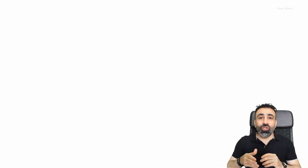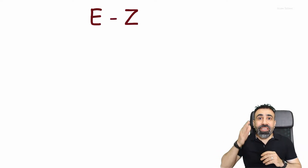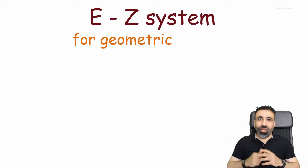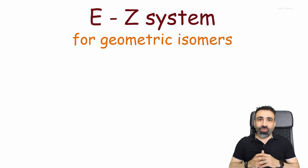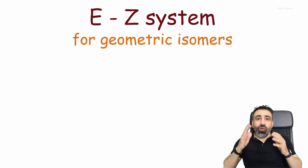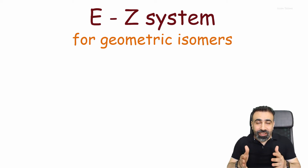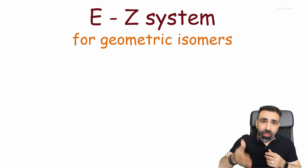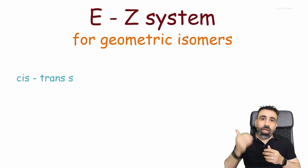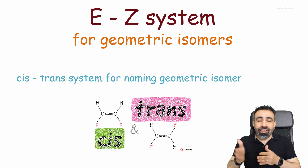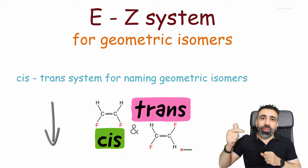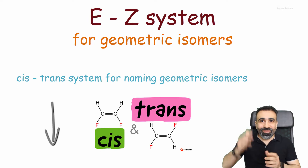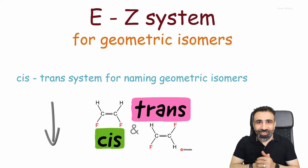Hi and welcome back with a new video about the EZ system for naming geometric isomers. For better understanding, I advise you to watch my previous video about the cis-trans system for naming geometric isomers, then you can continue with this one. Let's start.